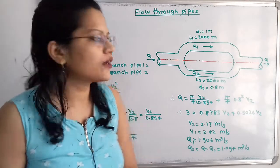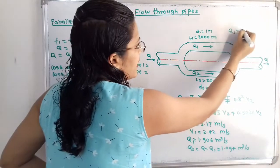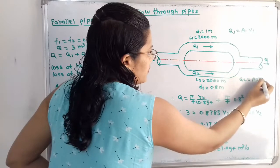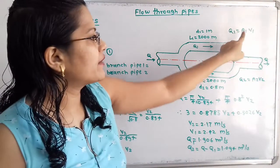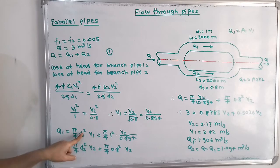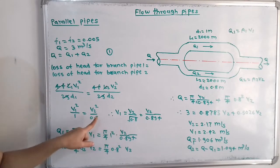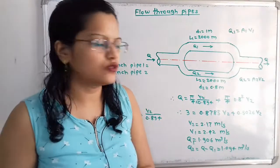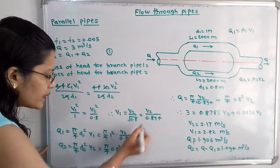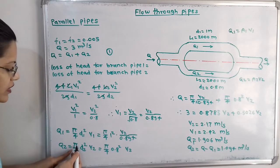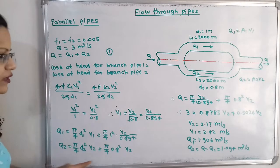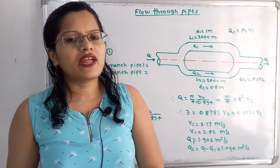Now we express Q1 and Q2 in terms of V2. Since Q1 = A1·V1, we get Q1 = (π/4)·D1²·V1 = (π/4)·1²·(V2/0.894). Similarly, Q2 = A2·V2 = (π/4)·D2²·V2 = (π/4)·0.8²·V2. Both Q1 and Q2 are now expressed in terms of the single unknown V2.